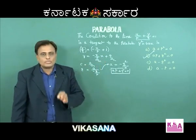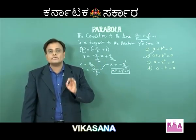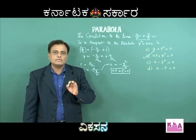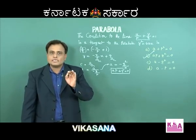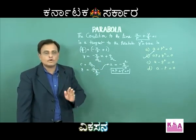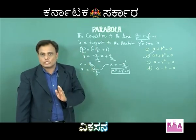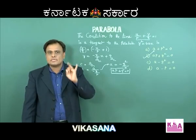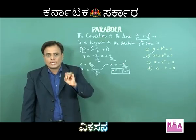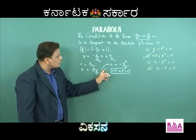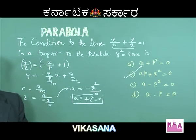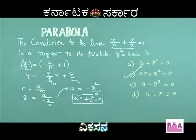Once again to review: before solving such examples, one must know the condition for tangency — if y = mx + c touches the parabola, then c = a/m. First, convert the given line equation into y = mx + c form to get the values of m and c, then apply the condition. For this example, ap + q² = 0, so option B is the right option. Dear students, please take down this problem.